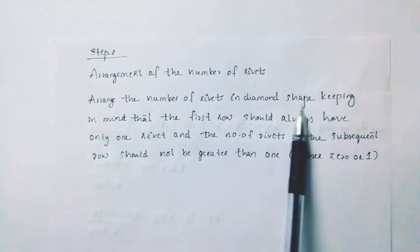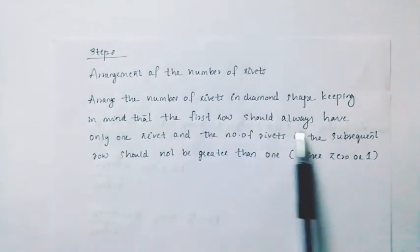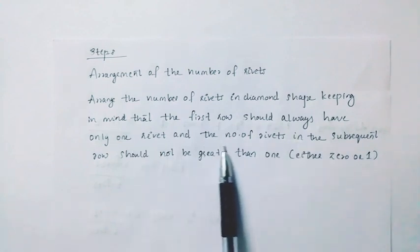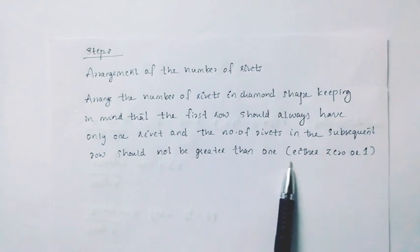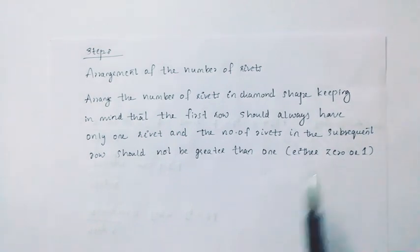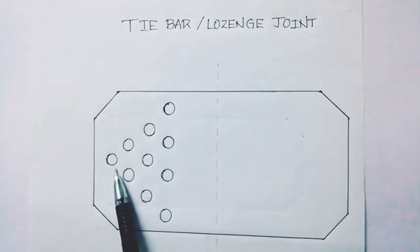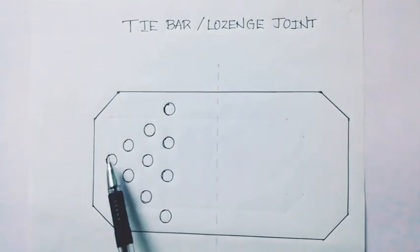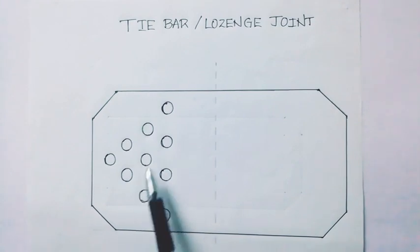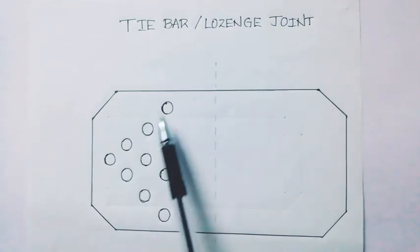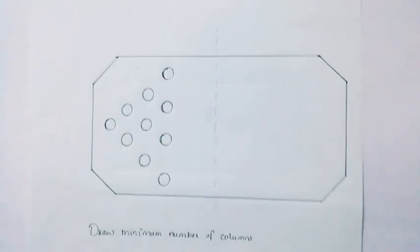Arrange the number of rivets in a diamond shape, keeping in mind that the first row should always have only one rivet and the number of rivets in subsequent rows should not be greater than 1 more than the previous row. So the sequence is: row 1 has 1 rivet, row 2 has 2, difference is 1; row 3 has 3, difference is 1; row 4 has 4, difference is 1.